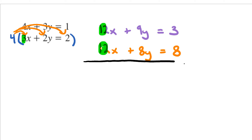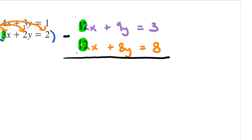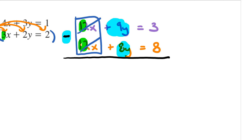The x variables now have the same coefficient, which is 12. The question is: how can you eliminate the x variables — would you add them or subtract them? You would subtract. So 12x minus 12x eliminates the x variables. And then I have positive 9y minus 8y — 9 minus 8 is 1, so that's just y. And finally, 3 minus 8 is going to be negative 5. So y equals negative 5.